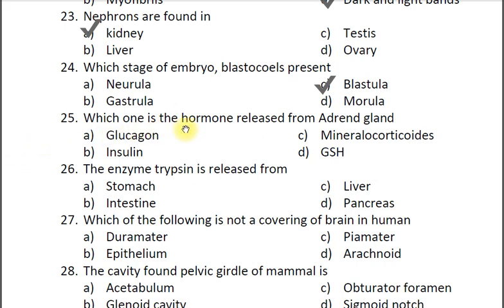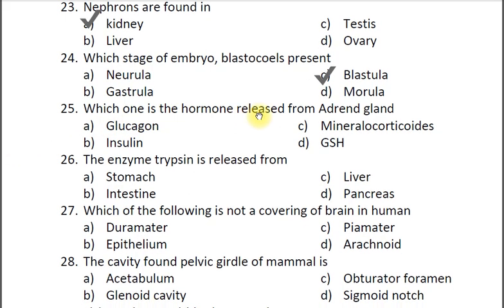Question twenty-five: Which hormone is released from the adrenal gland? A glucagon, B insulin, C mineralocorticoids, D GH. The correct answer is C mineralocorticoids. For example, cortisol and aldosterone. In addition to mineralocorticoids, the adrenal gland also produces cortisol and aldosterone.